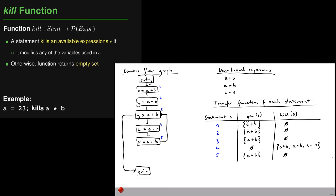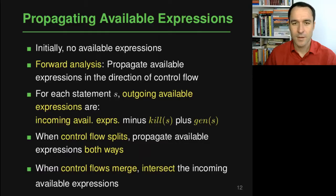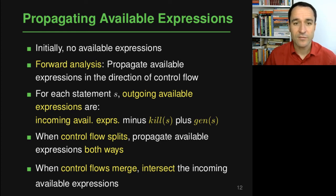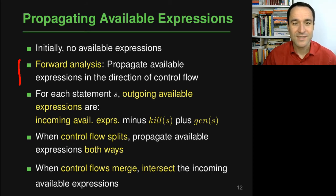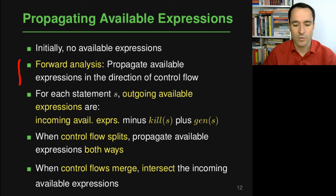Now that we have the transfer functions, we propagate this information through the program. We start with the assumption that initially there are no available expressions — nothing has been computed yet. This is a forward analysis, meaning we propagate available expressions in the direction of control flow. At the exit of each statement s, the available expressions are: (incoming available expressions) minus kill(s), plus gen(s). When control flow splits, we propagate along both paths. When control flow merges, we take the intersection of the incoming sets, keeping only expressions available on all paths.